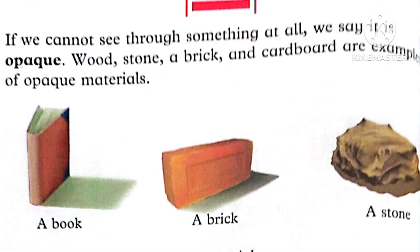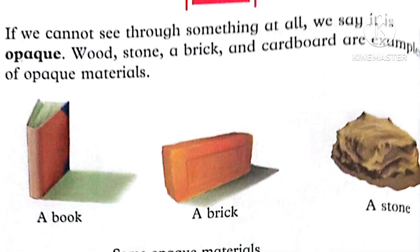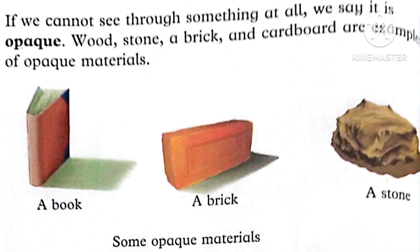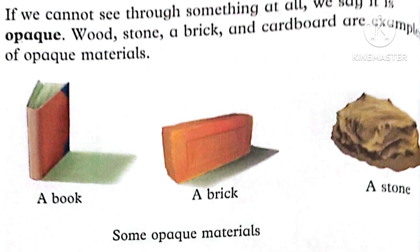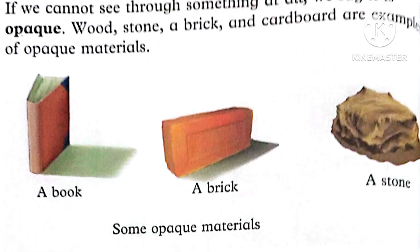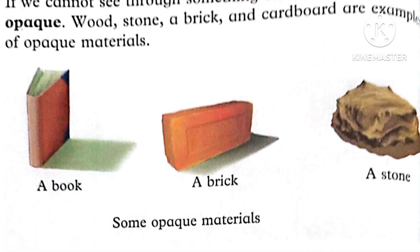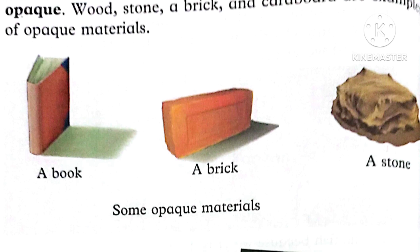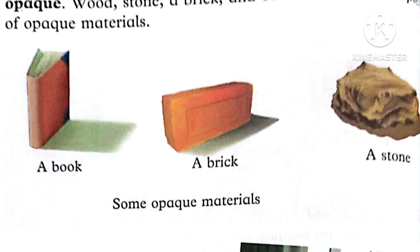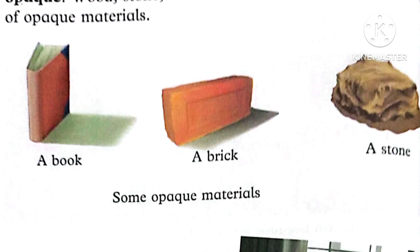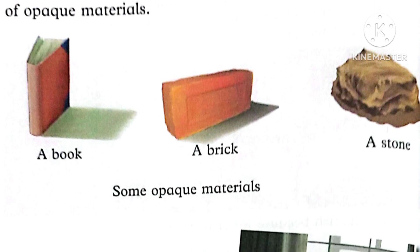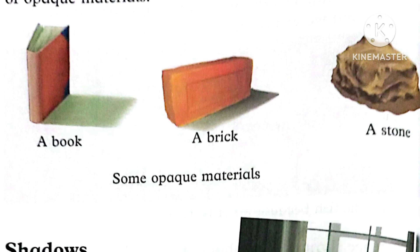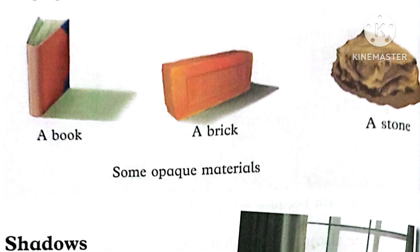You can try this experiment at home. First, try to see through a transparent material from the other side. Then try to see through a translucent object. Finally, try to see through an opaque object from the other side.